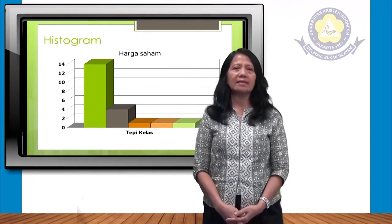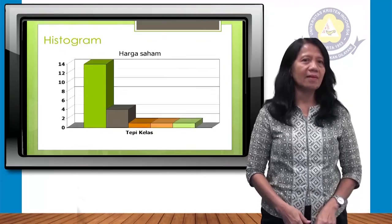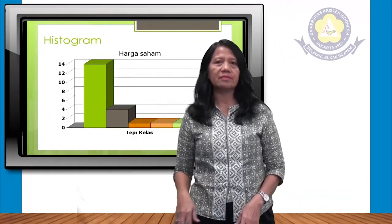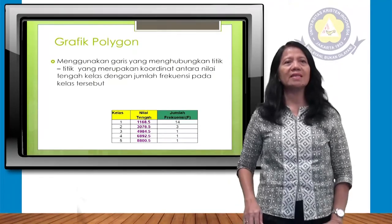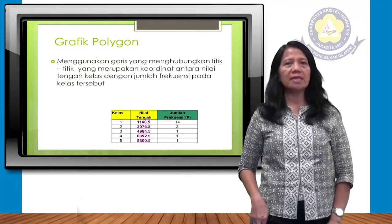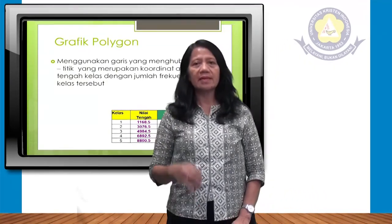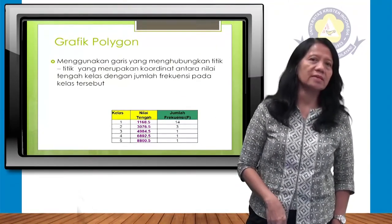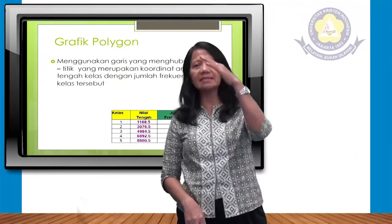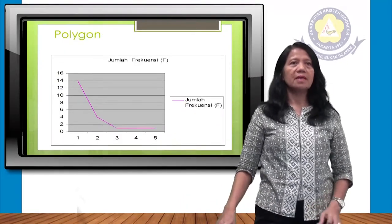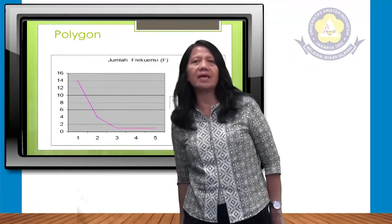Inilah histogramnya setelah dibuat dari data tadi: harga saham frekuensi 14, kemudian 3, 1, 1, 1 untuk masing-masing kelas. Selanjutnya, grafik poligon menggunakan garis yang menghubungkan titik-titik yang merupakan koordinat antara nilai tengah kelas dengan jumlah frekuensi pada kelas tersebut. Kelas 1 nilai tengahnya 1.168,5 dengan frekuensi 14.